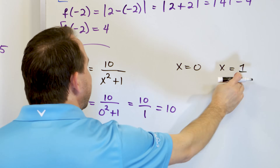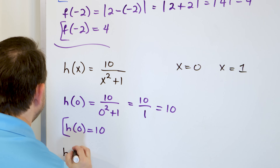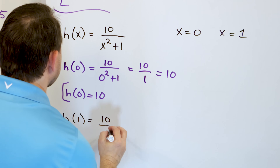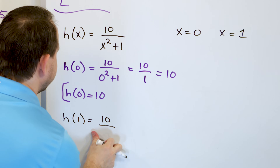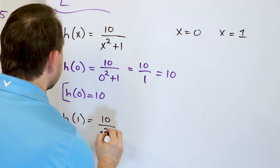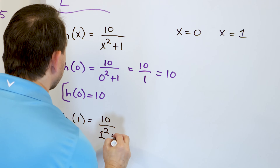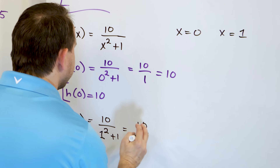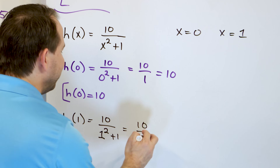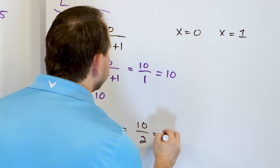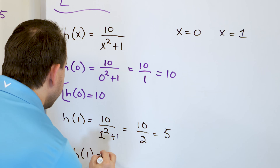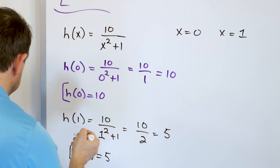Now we evaluate at x equals 1: h of 1 is 10 over 1 squared plus 1. That's 10 over 1 plus 1, which is 10 over 2, and that gives you 5. So h evaluated at 1 is 5.